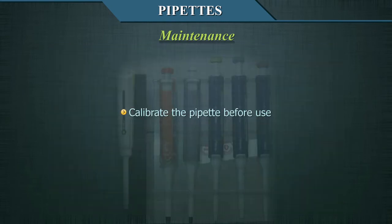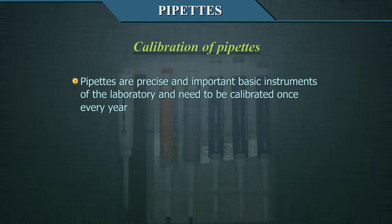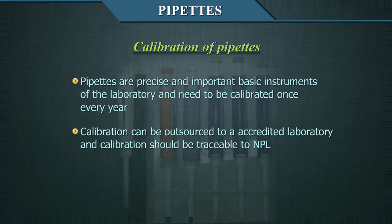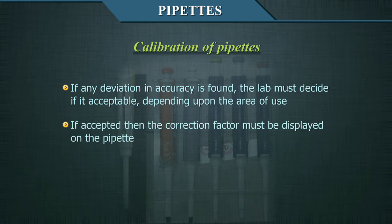Calibrate the pipette before use. Pipettes are precise and important basic instruments of the laboratory, and they need to be calibrated once every year. The calibration can be outsourced to an accredited laboratory, and calibration should be traceable to the NPL, the National Physical Laboratory. If any deviation in accuracy is found, the lab must decide if it is acceptable depending upon the area of use. If accepted, the correction factor must be displayed on the pipette.